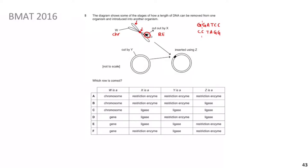Restriction enzymes can make two kinds of cuts: a straight blunt-end cut through both strands simultaneously, or a staggered cut that produces sticky ends. Ideally you want sticky ends so that complementary single-stranded overhangs on the gene and the plasmid can hydrogen bond together. DNA ligase then completes the final sugar phosphate backbone seal.